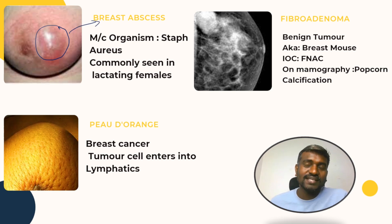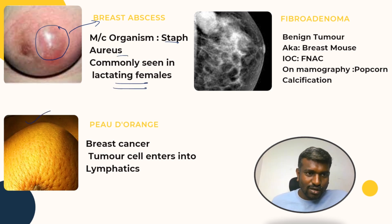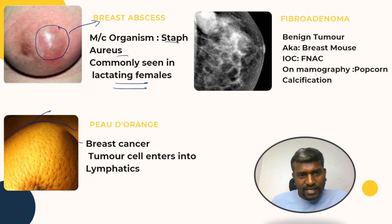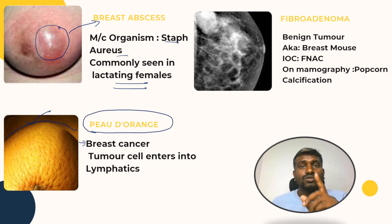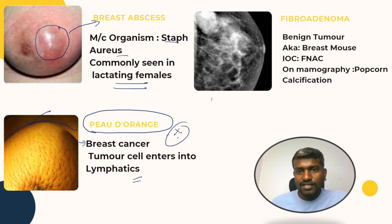Look at the image carefully — this is going to be breast abscess. The most common organism is Staph aureus and it is commonly seen in lactating females. This next image looks like an orange, but it is a breast cancer called peau d'orange — very important for the exam.